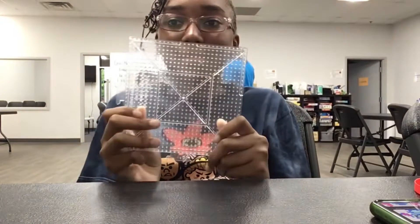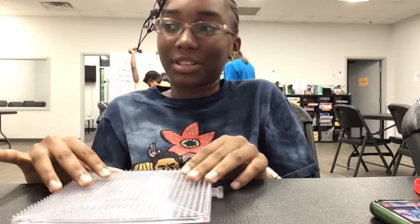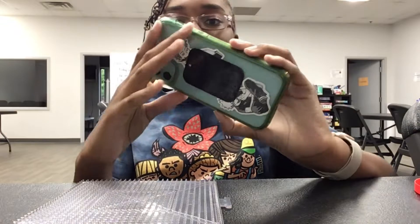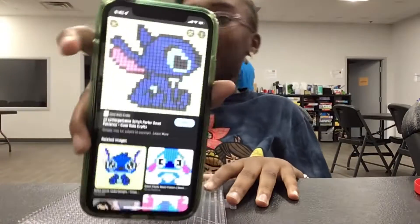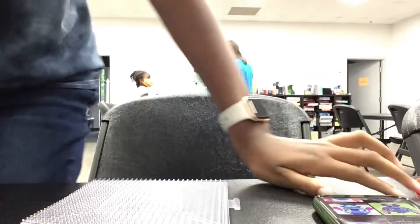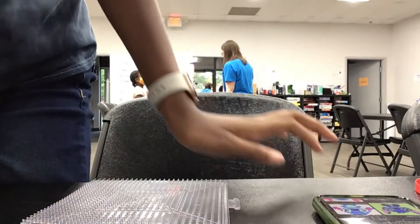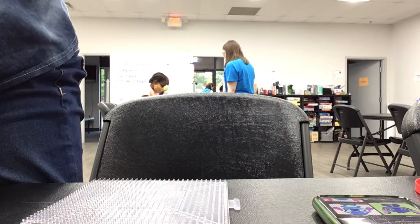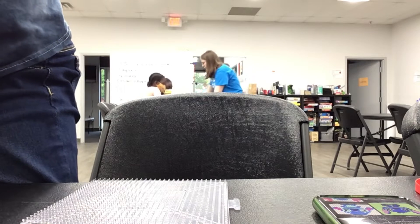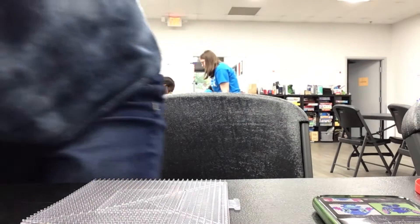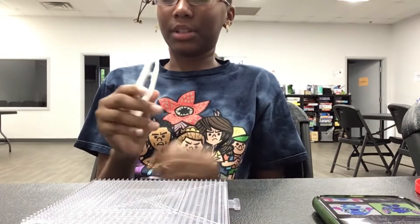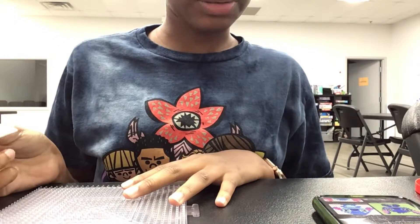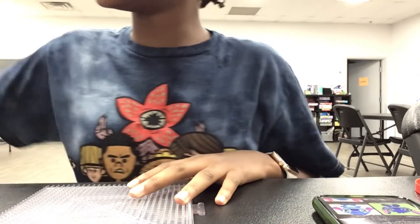So first we are going to get our perler beads placed. Anyway we're going to start off with his outline. So first I'm going to get a bowl and tweezers to pick up beads, so I'm going to try to start with his outline.